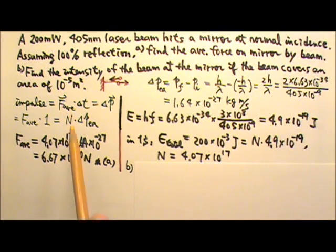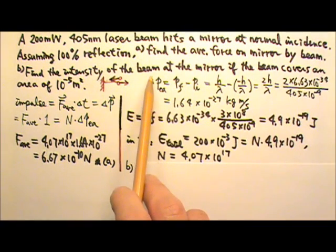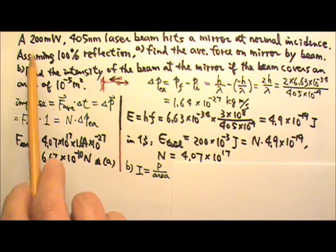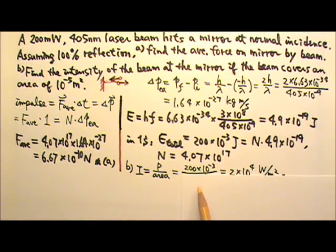For part B, we're looking for the intensity of the laser beam. Intensity by definition is power per area. The power is 200 milliwatts, which is 200 times 10 to the negative 3rd. Area is 10 to the negative 5th. This gives us 2 times 10 to the 4th watts per meter squared.